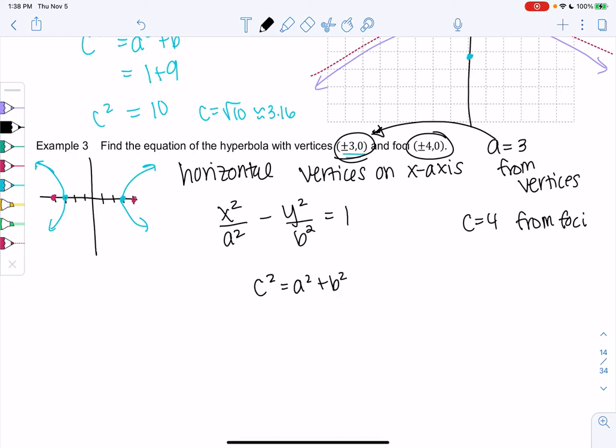Again, remember formulas are different for ellipses. For ellipses. So what do we get? We get 16 equals 9 plus b squared. So minus 9 minus 9. What's that? 7 equals b squared.